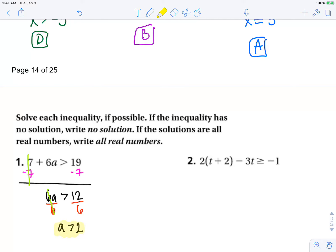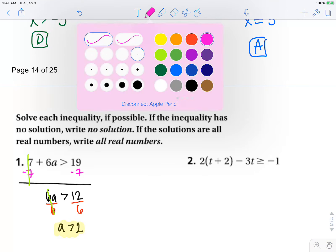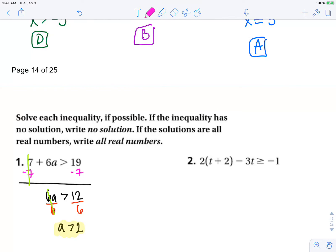Now, in the next problem, number two, it's multi-step. The first step is to distribute: 2t + 4 - 3t ≥ -1. Now we want to simplify the left side.